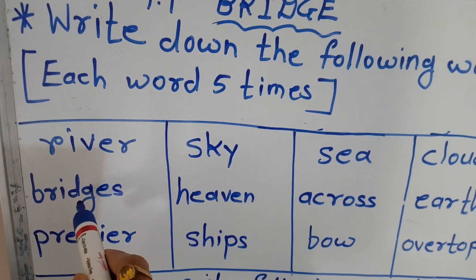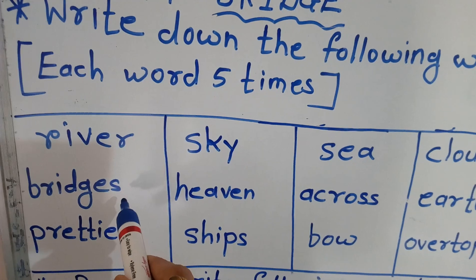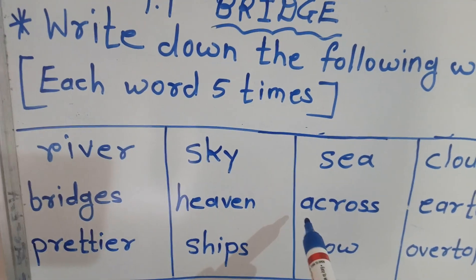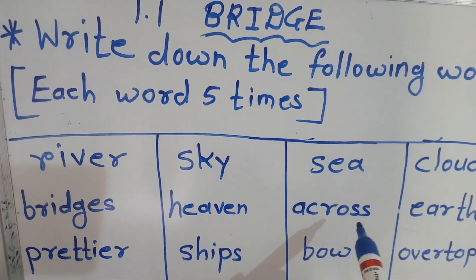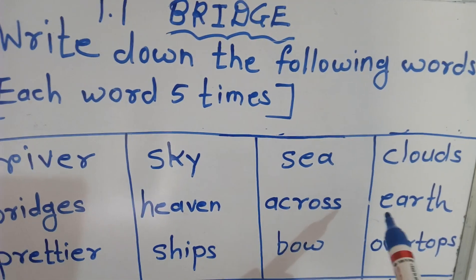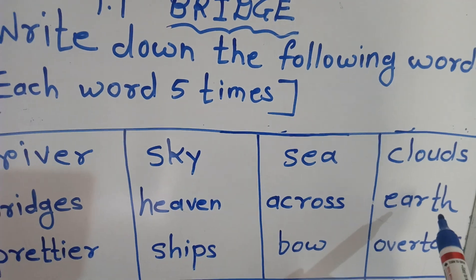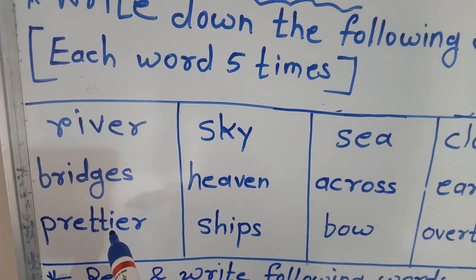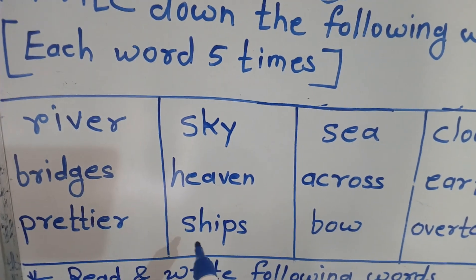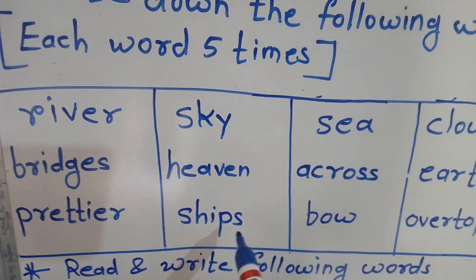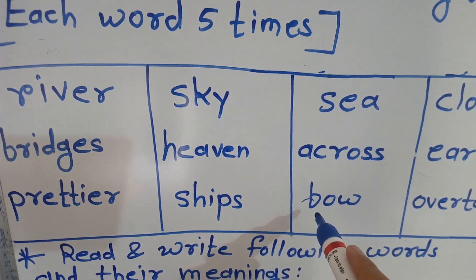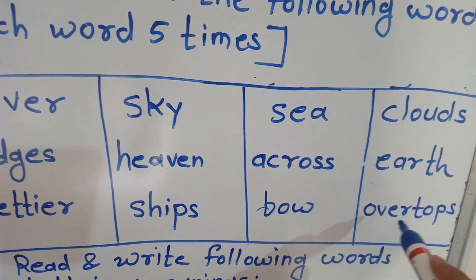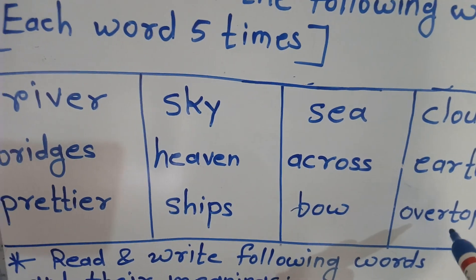B-R-I-D-G-E-S, Bridges. H-E-A-V-E-N, Heaven. A-C-R-O-S-S, Across. E-A-R-T-H, Earth. P-R-E-T-T-I-E-R, Prettier. S-H-I-P-S, Ships. Over Tops.